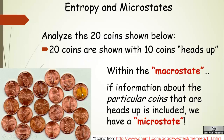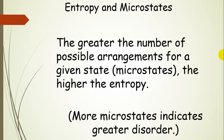If I took three tails-up coins, turned them over to heads-up, and in exchange turned three heads-up coins to tails-up, we still have 10 coins heads-up — but now we have a different microstate, a different arrangement. The macrostate is the same: 10 coins heads-up and 10 coins tails-up. Entropy is related to these microstates. The greater the number of possible arrangements for some state, the higher the entropy. More microstates for a given macrostate means greater disorder.